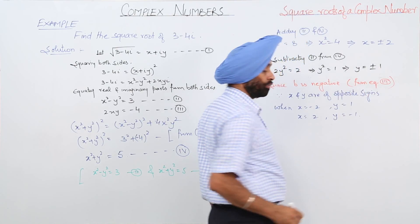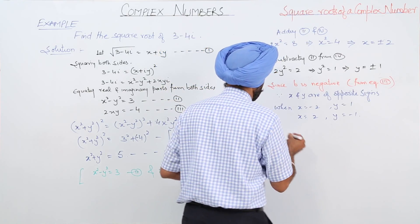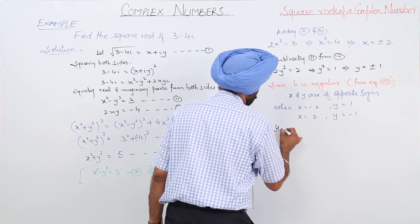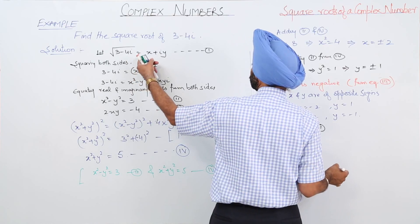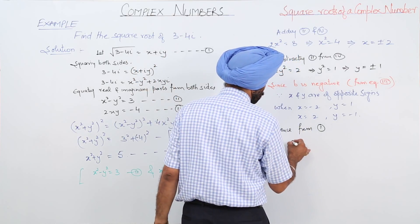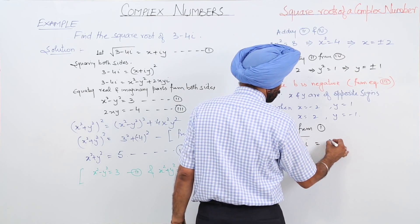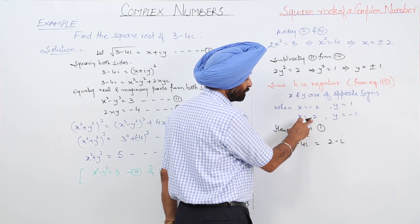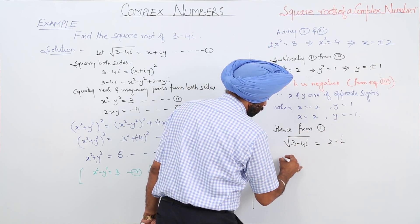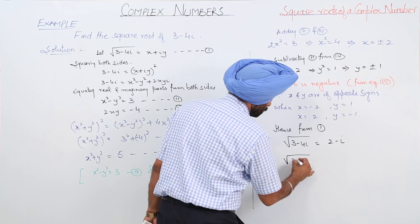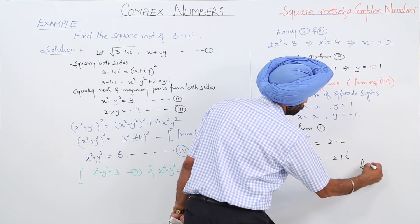Hence, from equation 1, we can write: the square root of 3 minus 4 iota is equal to 2 minus iota, when x is 2 and y is negative 1; or the square root of 3 minus 4 iota is equal to negative 2 plus iota. Answer.